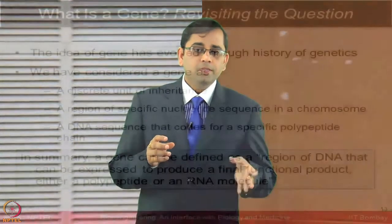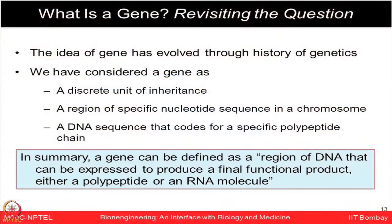To give a broad overview: a gene is a region of DNA that can be expressed to produce a final functional product — it can be a polypeptide or an RNA molecule. This is how we think about a gene as a discrete unit of inheritance providing functional information.